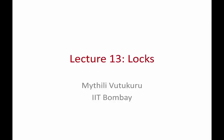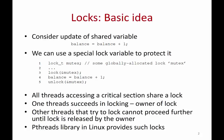In this lecture we are going to understand locks in more detail. We have seen in the previous lecture that any time multiple threads are accessing shared data, race conditions can happen. Suppose you are incrementing a shared variable called balance — multiple threads can increment it concurrently and it can result in incorrect values of the variable.